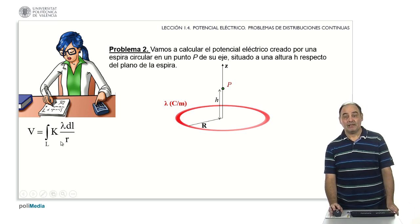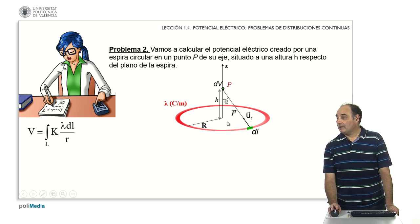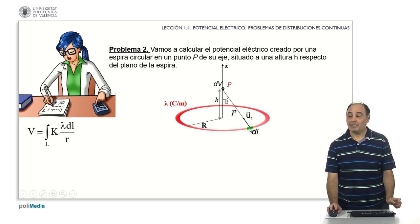The formula is again the formula of the linear distributions. And that's the vector r that we have to use. This distance is the one that I care about, how much distance there is from the point charge, infinitesimal, to the point where I want to know the field.